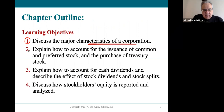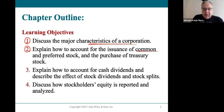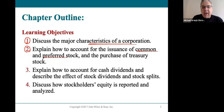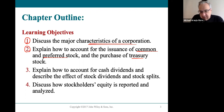Learning objective two — the important thing to understand is we have common stock. Some companies issue something called preferred stock, so you've got to understand and identify that. And sometimes companies buy back their own stock, which is what treasury stock is.